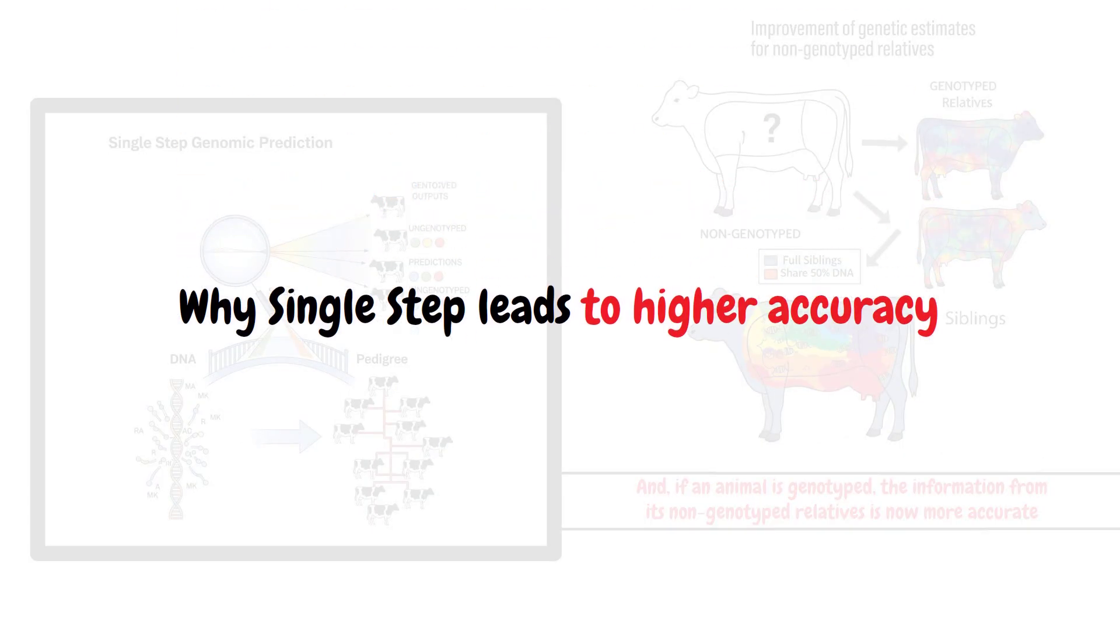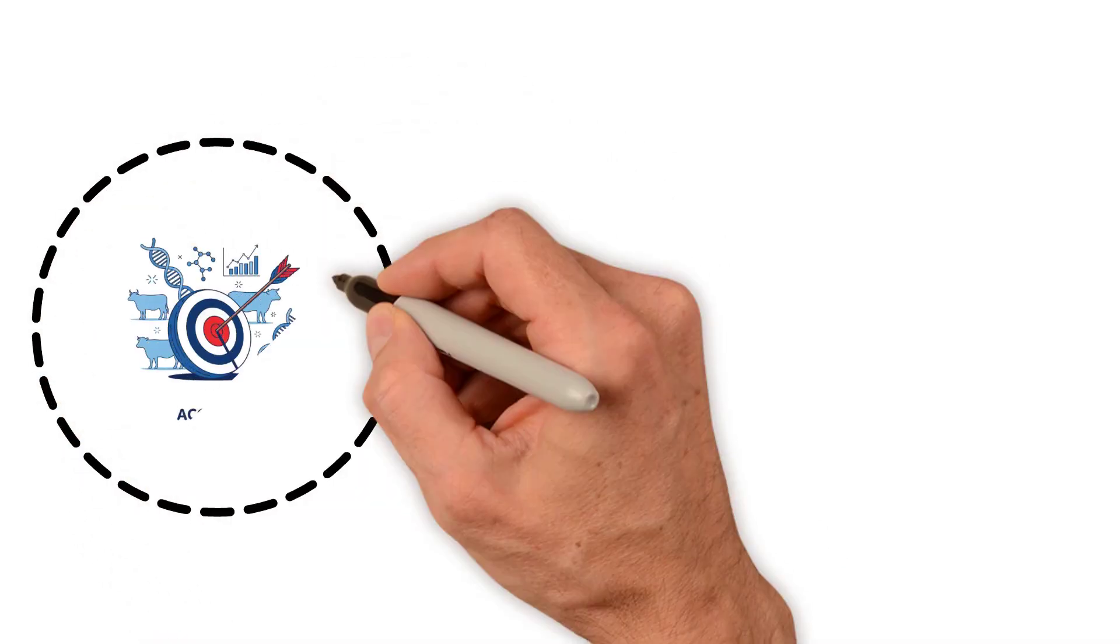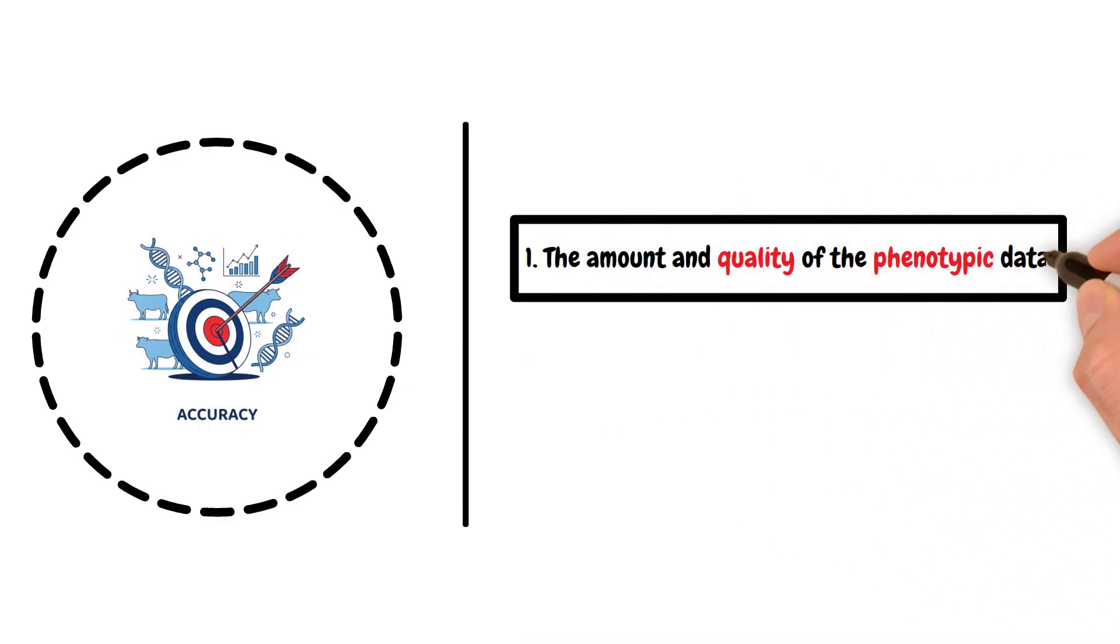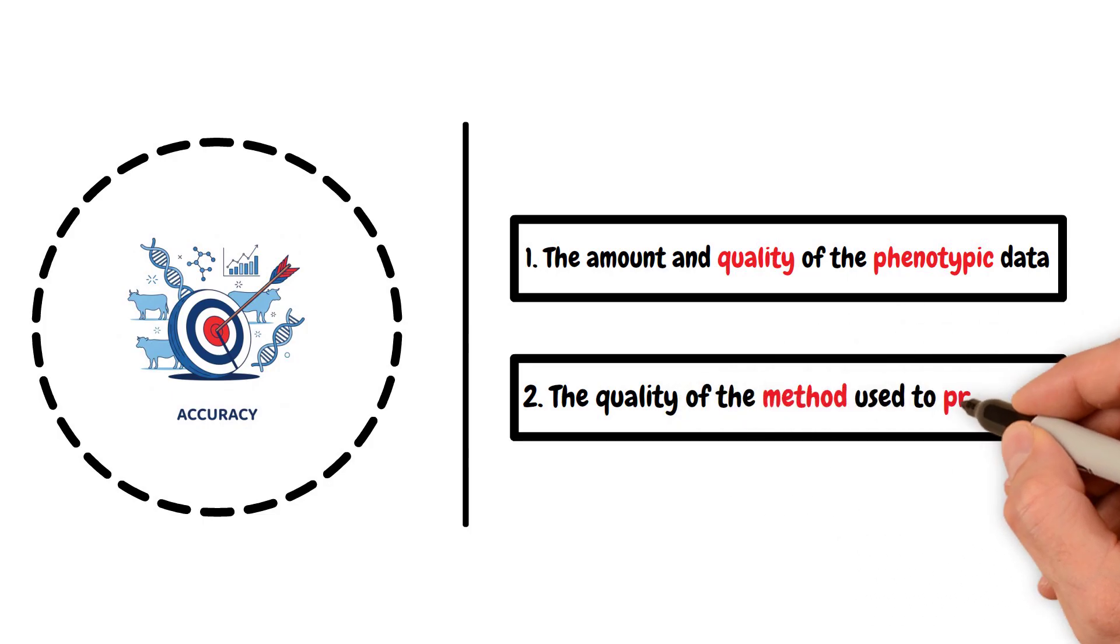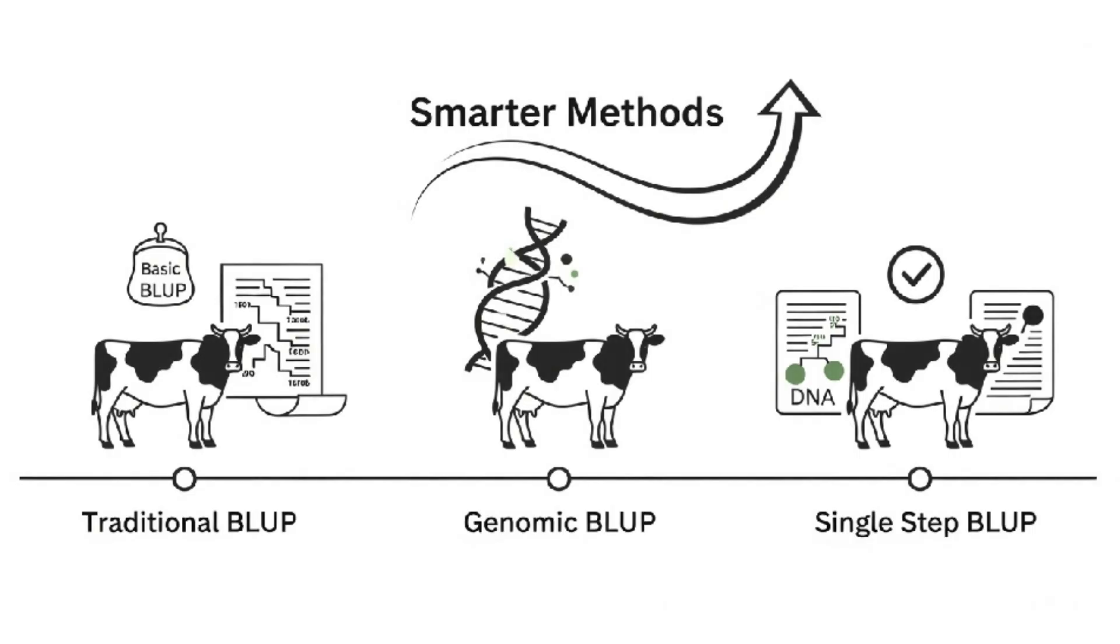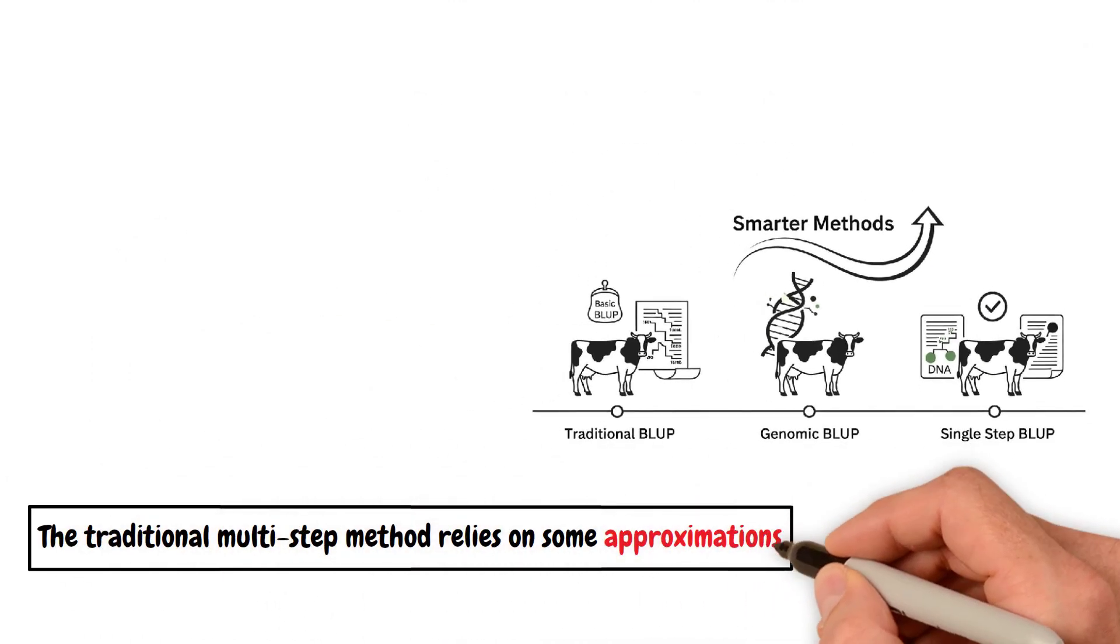Why single-step leads to higher accuracy? In animal breeding, accuracy comes from two things: 1. The amount and quality of the phenotypic data, and 2. The quality of the method used to process it. While data is needed, and having lots of data helps, smarter methods can extract more value from the data we have and increase prediction accuracy. The traditional multi-step method relies on some approximations.